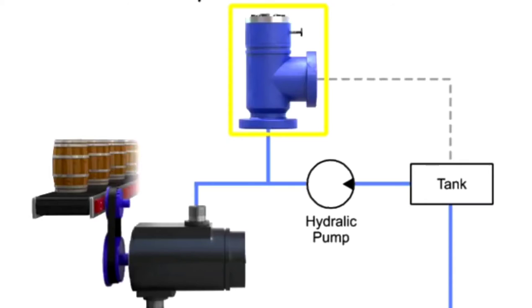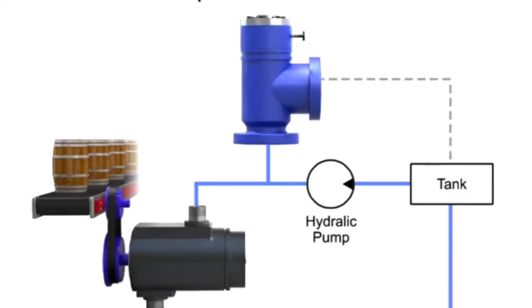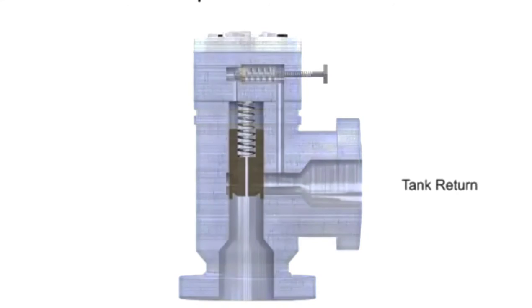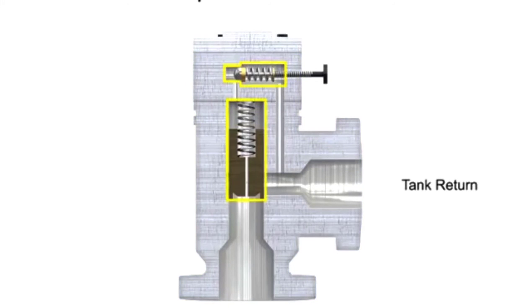A pilot operated relief valve makes it possible to handle higher pressures and flow. It's also much smaller than direct acting valves rated for the same pressure. This valve has two stages.